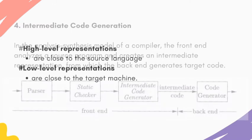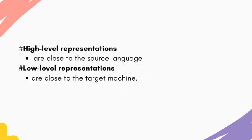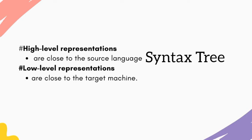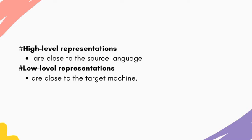In this intermediate representation, we have two types: high-level representation and low-level representation. High-level intermediate representation is called source language representation — it is very close to the source language, as seen in the syntax tree. Low-level representation is called target code — it is close to the target machine code.